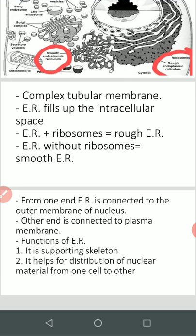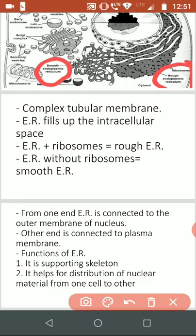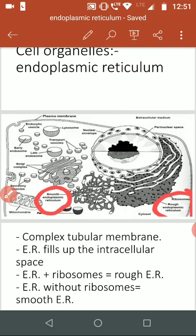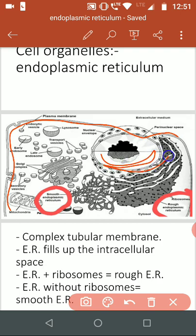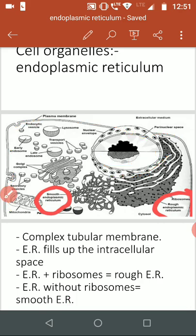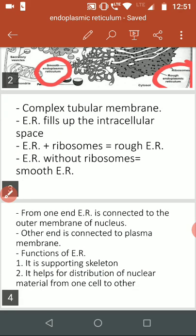ER is connected from the outer membrane of the nucleus to the plasma membrane. What is plasma membrane? Plasma membrane is the outer membrane of the cell. And this is the nuclear membrane, the outer part of the nucleus. So endoplasmic reticulum acts as a bridge between the nuclear membrane and the plasma membrane for communication between cells.